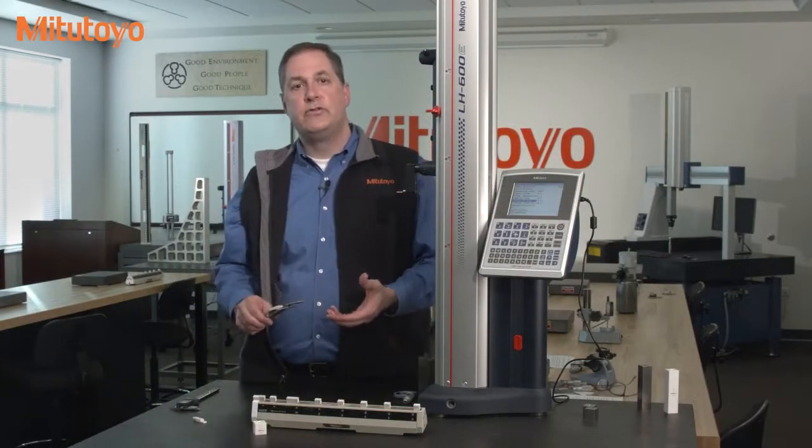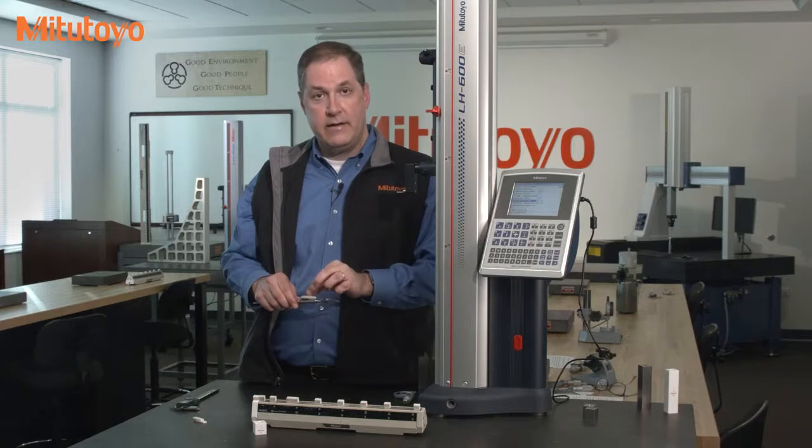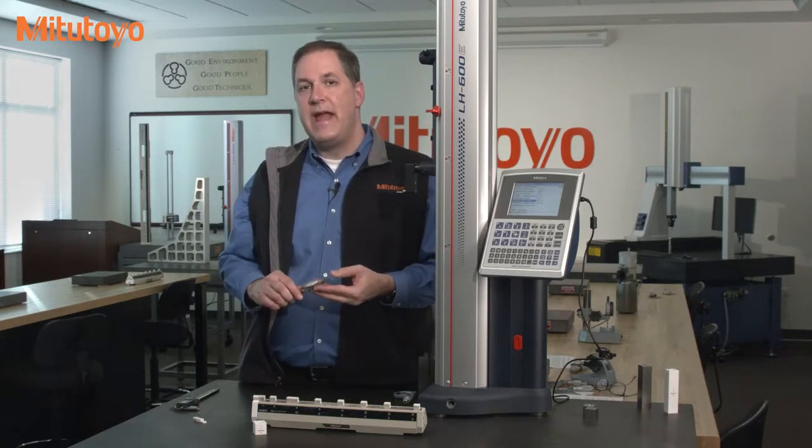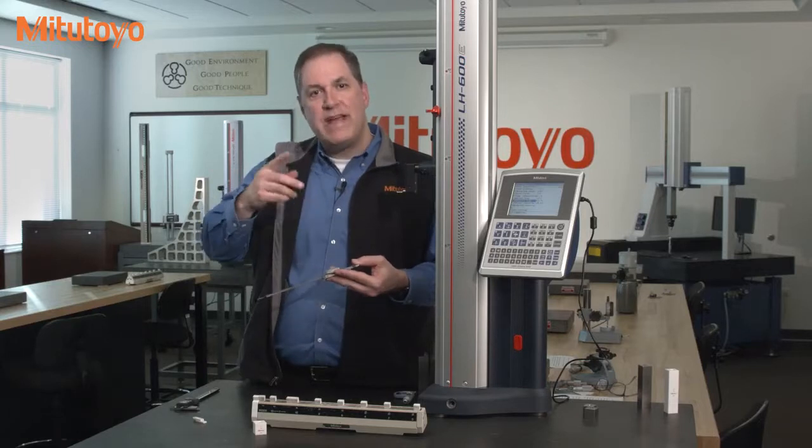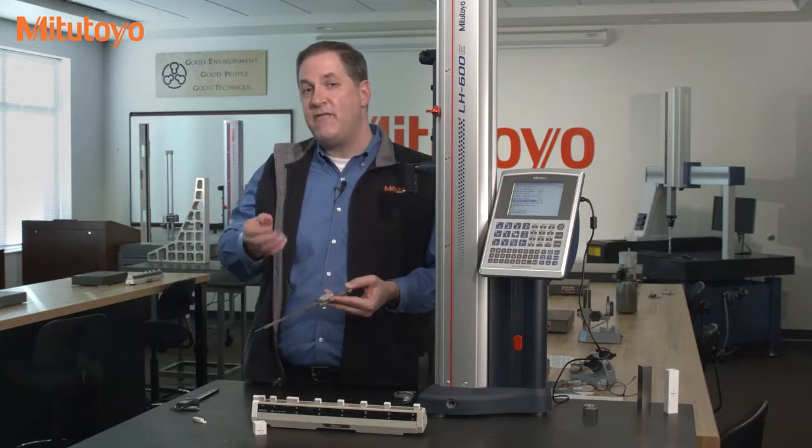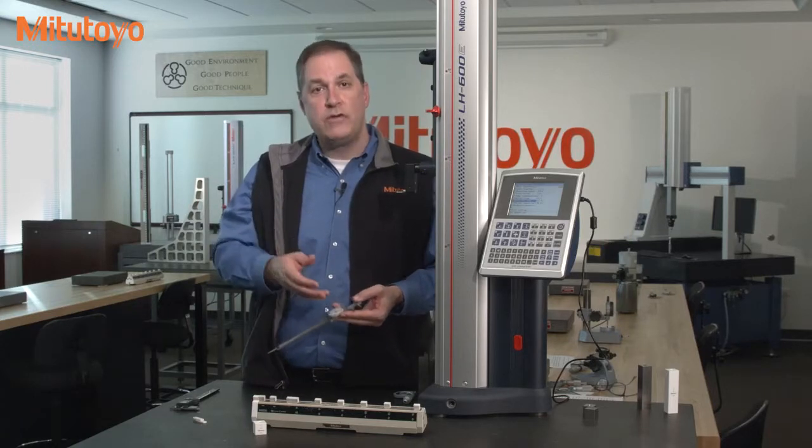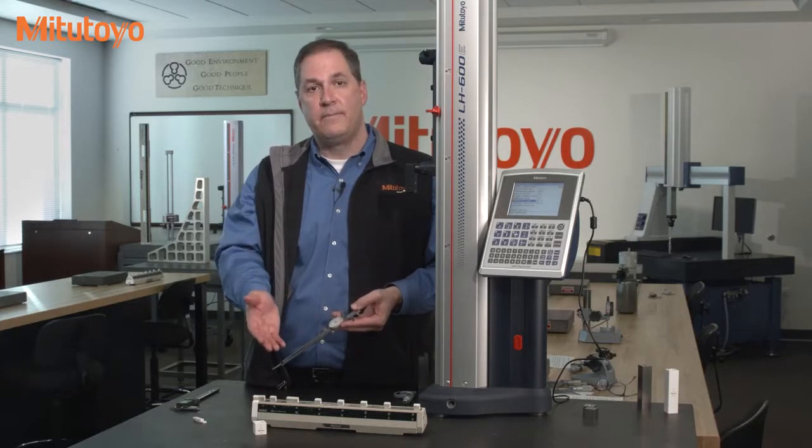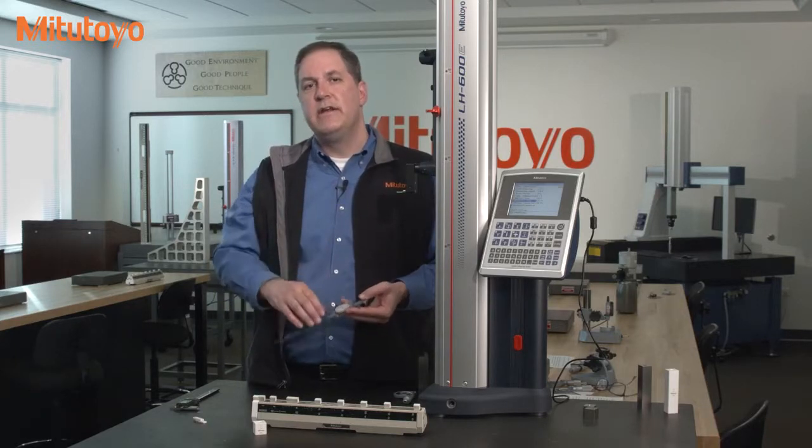Now dial calipers use little gears inside and the gears can wear. It's possible for there to be errors within a rotation of the dial that you won't see if the calibration method results in the pointer always being at the 12 o'clock position like you just saw.